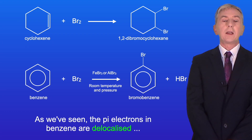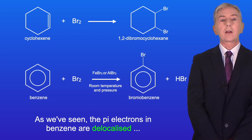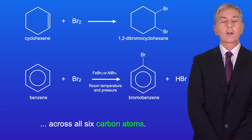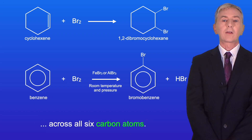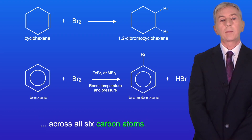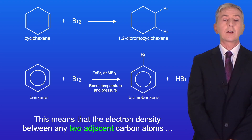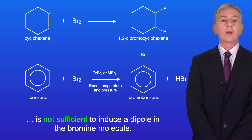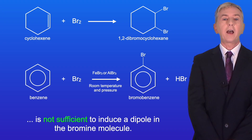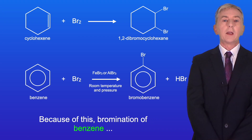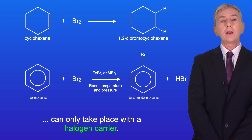As we've seen, the pi electrons in benzene are delocalized across all six carbon atoms. This means that the electron density between any two adjacent carbon atoms is not sufficient to induce a dipole in the bromine molecule. So because of this, bromination of benzene can only take place with a halogen carrier.